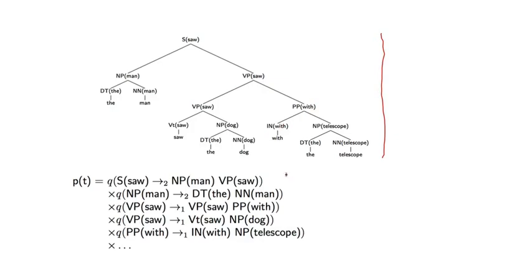The probability of this tree is again going to be a product of terms with one Q parameter for each rule that has been seen in the tree. And I've listed a few important ones here. There are a few other terms. And so, for example, the root of the tree, I have s-saw goes to np-man, vp-saw. And I have parameter Q for that rule, and so on and so on in the tree.